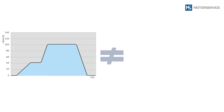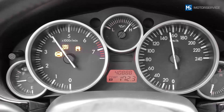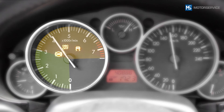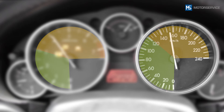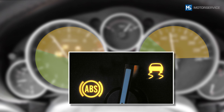This driving cycle has nothing to do with the so-called new European driving cycle used for vehicle prototype certification tests. Permanent monitoring can be interrupted under certain conditions — for example, at engine speeds of over 3,000 revolutions per minute, at speeds of over 120 kilometers per hour, or when driving safety systems are activated.